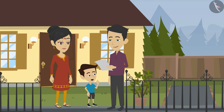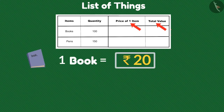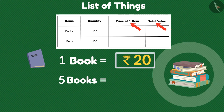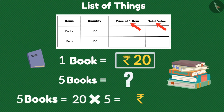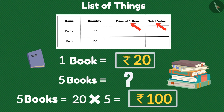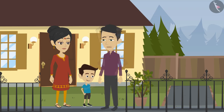How is that, Dad? Suppose one book costs rupees 20 and I want to buy five in total — then how much money is required to buy the books? 20 multiplied by 5, that is 100 rupees. Oh wow, Dad! Come on, let us go and buy things and see how much money we really need.